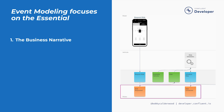First, event modeling captures the business narrative, or the sequence of events that describe how the state of the system changes over time. For example, two essential events in the lifecycle of a ride are when the user first requests the ride and when that ride is matched with an available vehicle and scheduled for pickup, both of which we've captured along the bottom of our example model as an orange event sticky note in a horizontal lane representing the ride's event stream. These orange event sticky notes represent event messages that will record to a Kafka topic dedicated to capturing all the events about rides in our system.